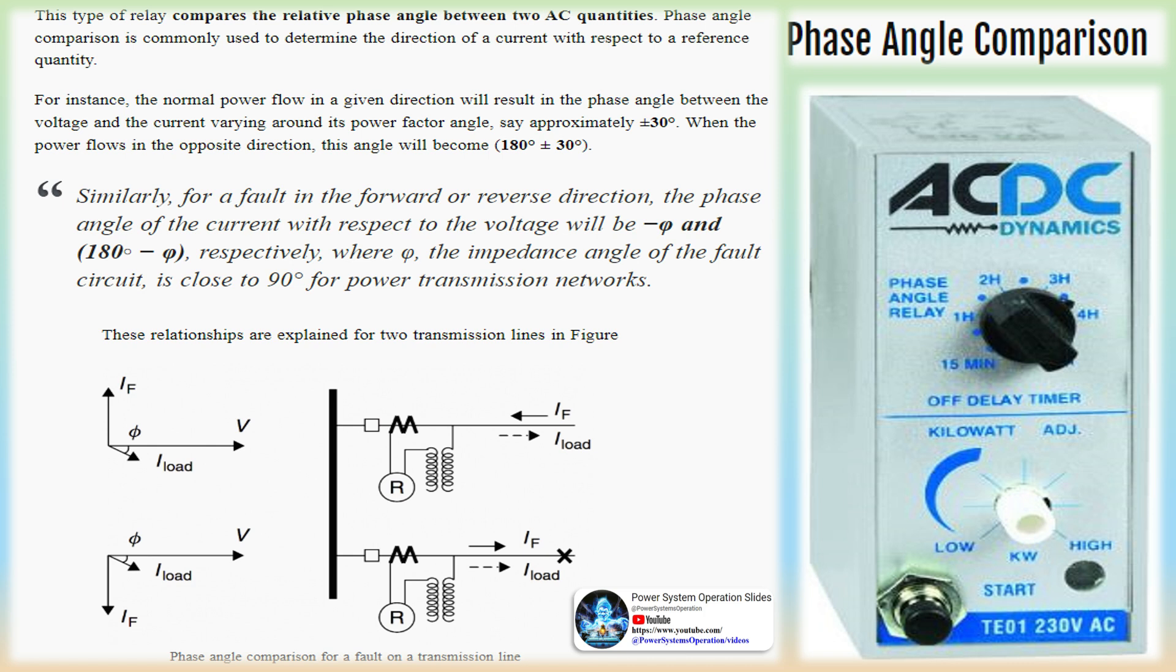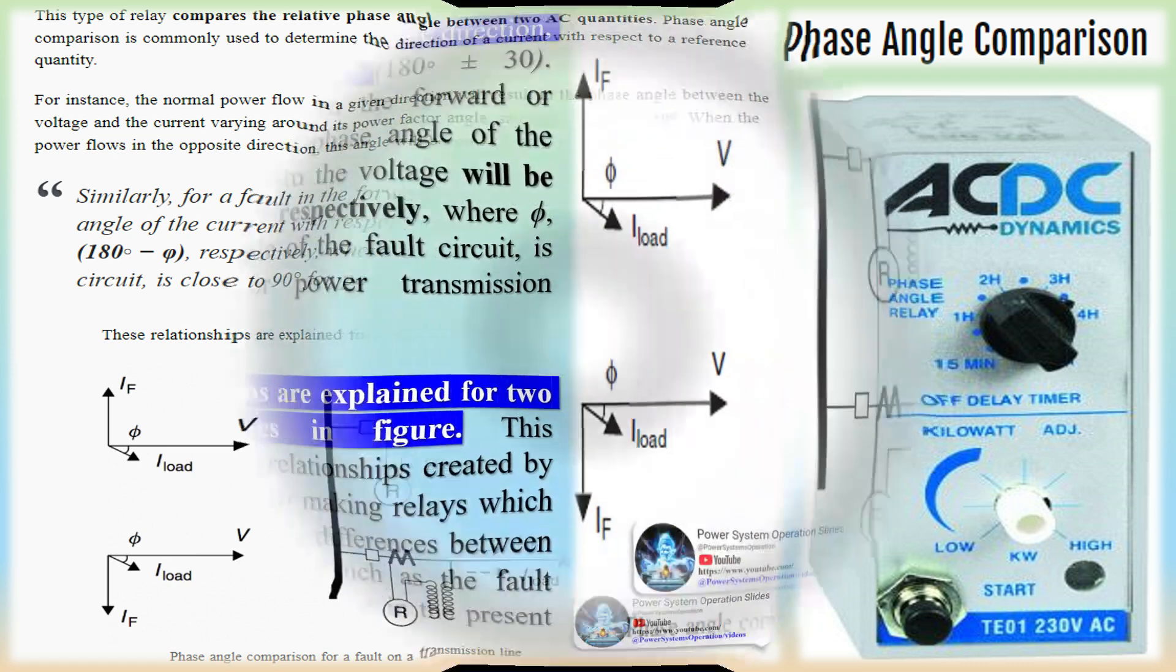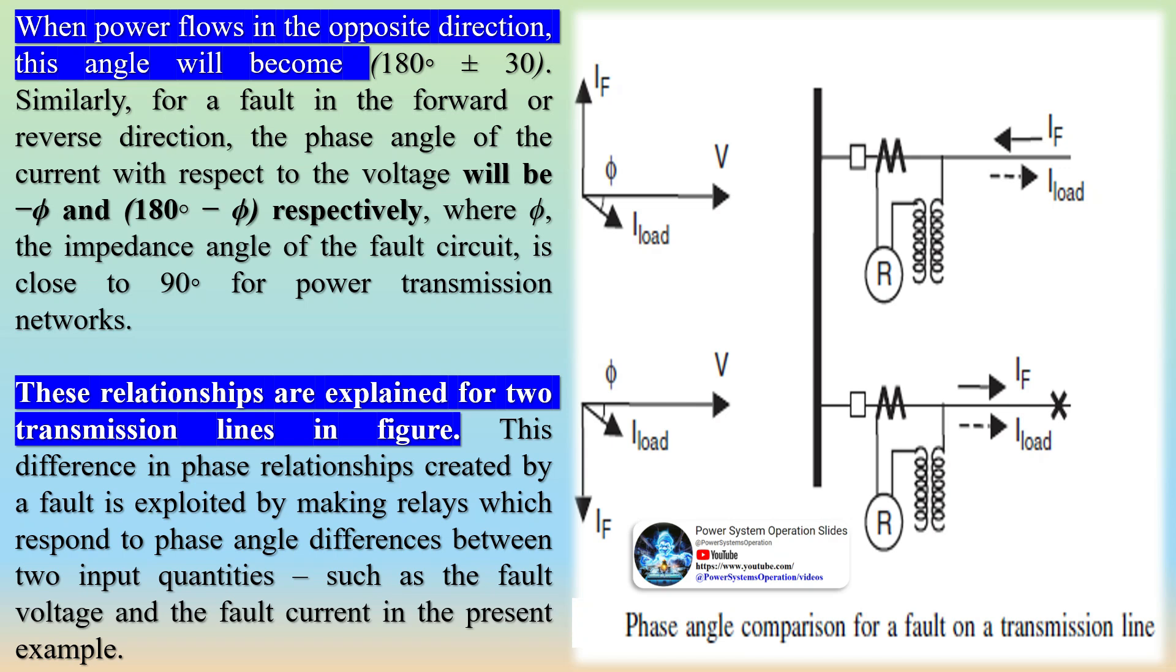Phase angle comparison. This type of relay compares the relative phase angle between two AC quantities. Phase angle comparison is commonly used to determine the direction of a current with respect to a reference quantity. For instance, the normal power flow in a given direction will result in the phase angle between the voltage and the current varying around its power factor angle, say approximately ±30°.